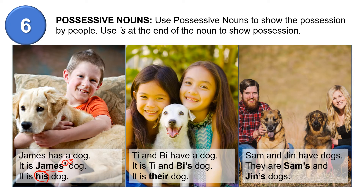Ty and Bai have a dog — they have the same ownership, one dog. In this case, we use Bai's dog: Ty has no apostrophe S, but for Bai, yes, we put apostrophe S. So it is Ty and Bai's dog. It is their dog.